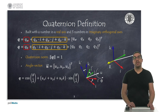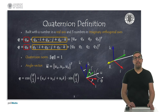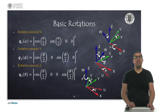Quaternions can be seen as the rotation of an angle theta through a given axis u. A unit vector multiplied by the sine of the semi-angle will provide the imaginary components of the quaternion, while the cosine of the semi-angle is the real component of the quaternion. The basic rotations are rotations along the axes of the reference system, that is, rotations around the x, y and z axes.